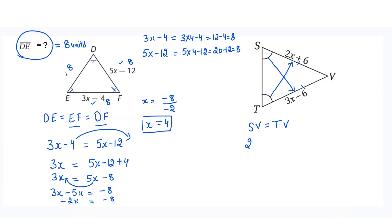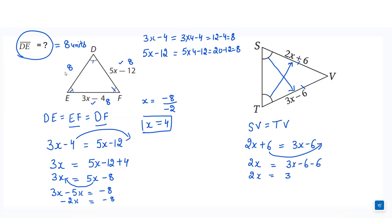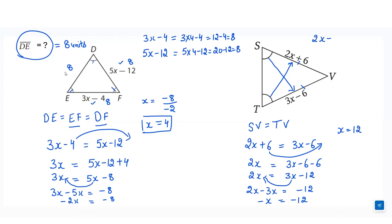In this case, we can write SV equals TV because it is an isosceles triangle. We put the values: 2x plus 6 equals 3x minus 6. Taking the number to one side: 2x equals 3x minus 12. Taking the variable to the other side: 2x minus 3x equals minus 12, so minus x equals minus 12, which means x equals 12.